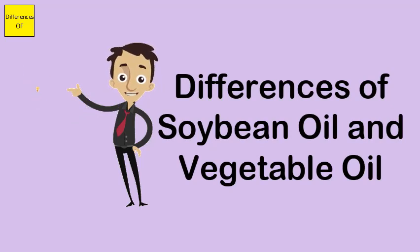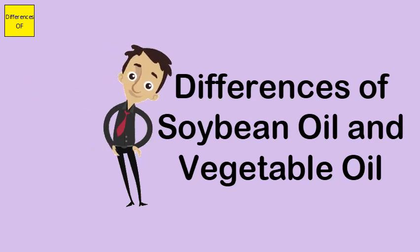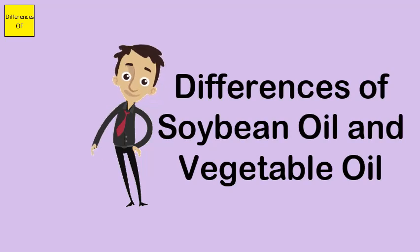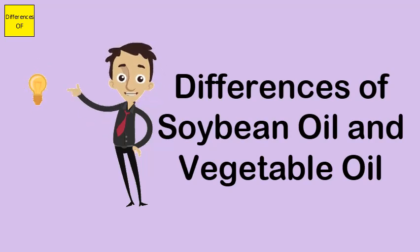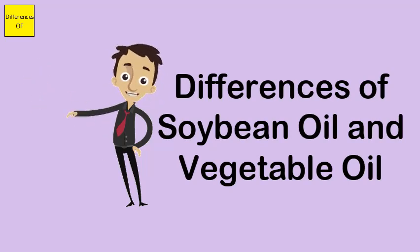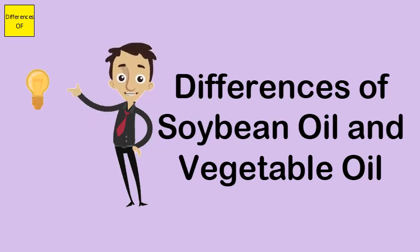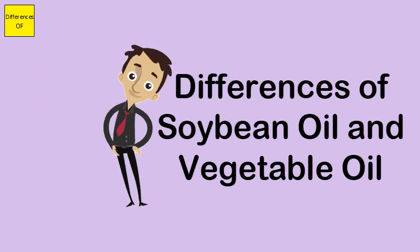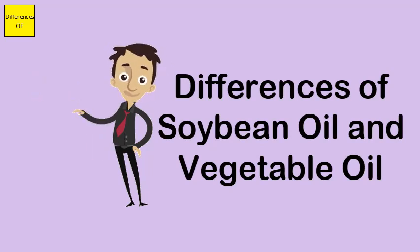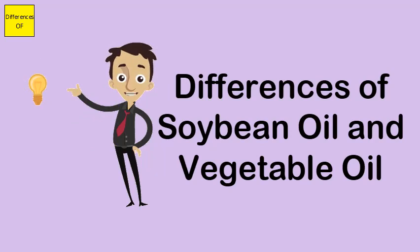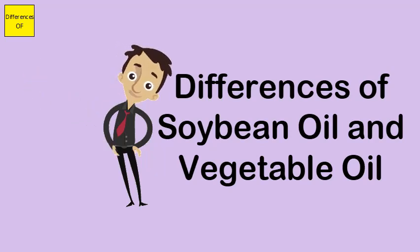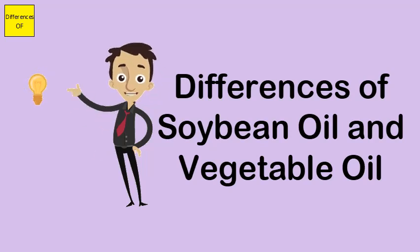Soybean oil is one type of vegetable oil. Vegetable oils come in different types, including palm oil, soybean oil, canola oil, pumpkin seed oil, corn oil, sunflower oil, safflower oil, peanut oil, grapeseed oil, sesame oil, argan oil, and rice bran oil. Soybean oil has a high smoke point, mild flavor and aroma, smooth texture, and light color.